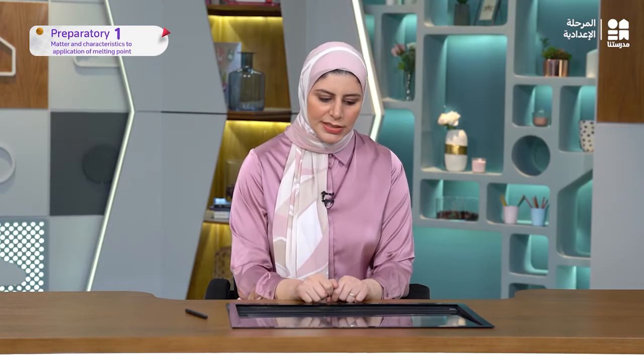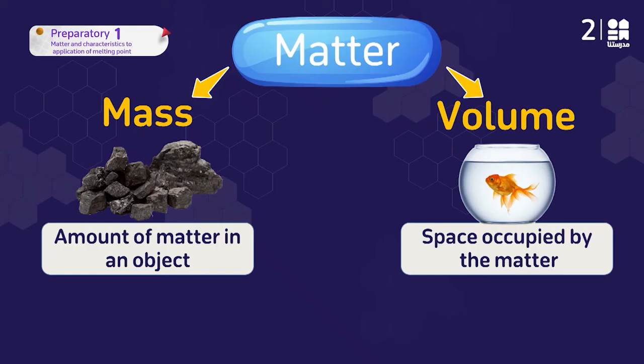So again: mass is the amount of matter in an object, and the volume is the space that is occupied by the matter — the space that any matter takes up.